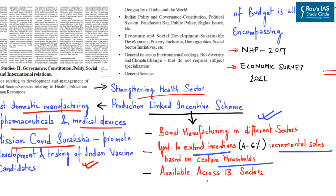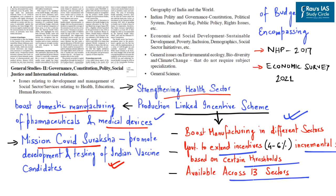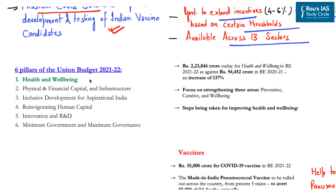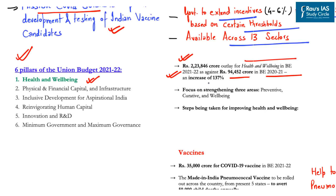The Production-Linked Incentive scheme is now available across 13 sectors, including medical devices and pharmaceuticals. The budget has allocated Rs 2,23,846 crores for health and well-being in the budget estimate for 2021-22, as against Rs 94,452 crores in the previous budget estimate — an increment of 137 percent. The government is clearly focusing on health and well-being.